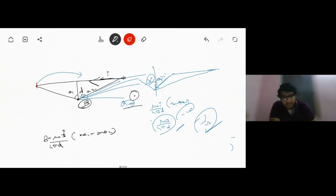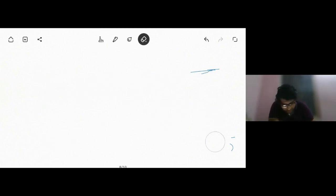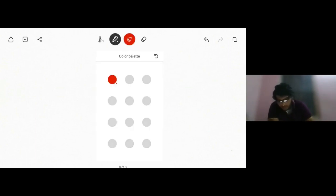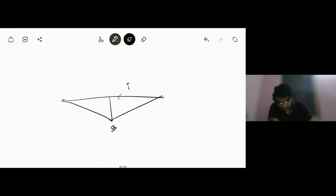Suppose we have a current-carrying wire of finite length. If we want to determine the magnetic field at a particular point—let me explain this again. Suppose this is a wire of finite length carrying current I, and we wish to calculate the field at point B. This angle is theta 1, this angle is theta 2. In that case, we can write B is given by mu not I by 4 pi D times (sine theta 1 plus sine theta 2). This is the field at that point.